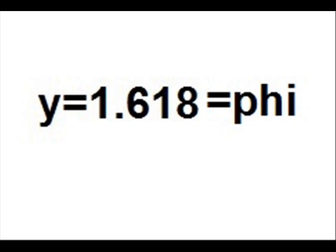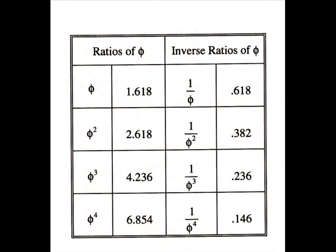Mathematicians and scientists have taken the Greek letter phi, and that is what they often use to refer to 1.618. You can play around with 1.618 — you can take ratios of it: phi squared, phi cubed, phi to the fourth. You can also take inverse ratios of phi: 1 over phi, 1 over phi squared, 1 over phi cubed.